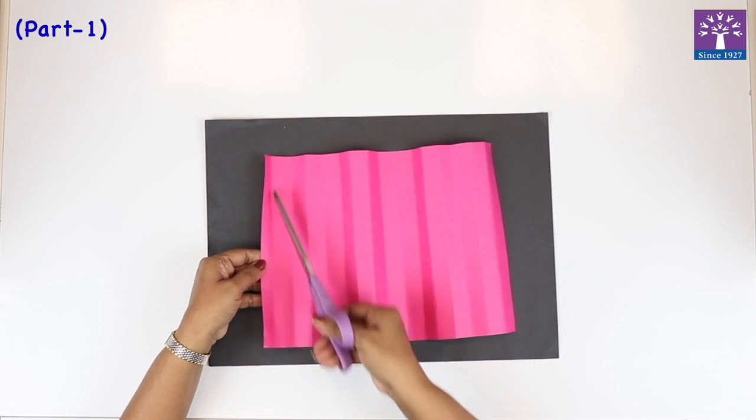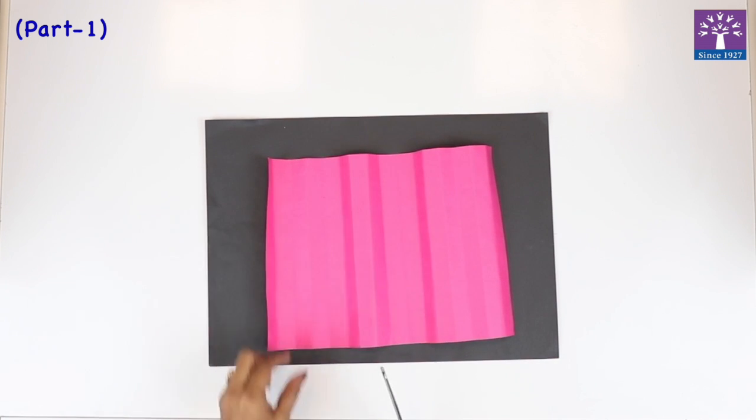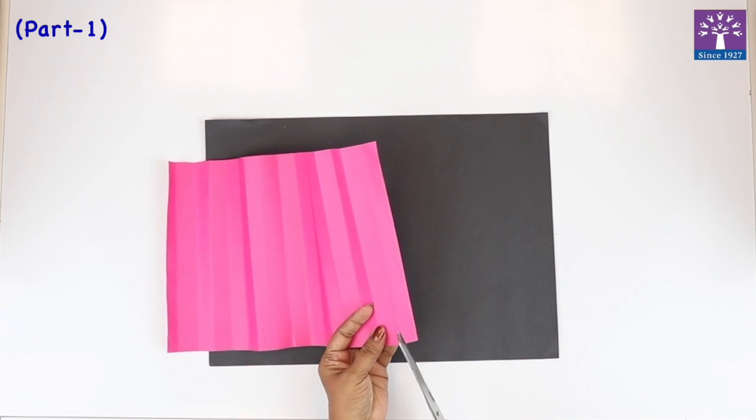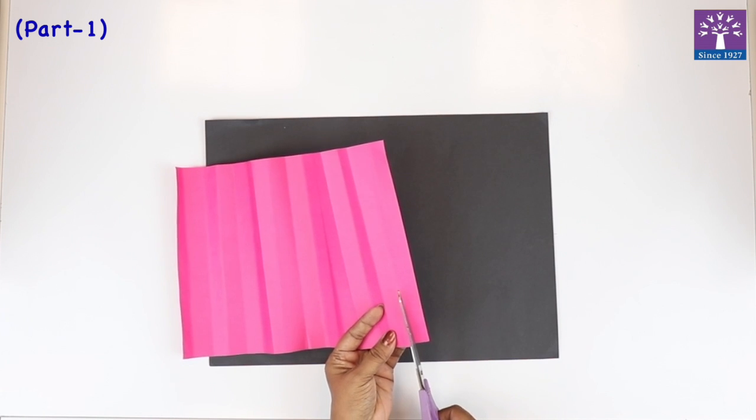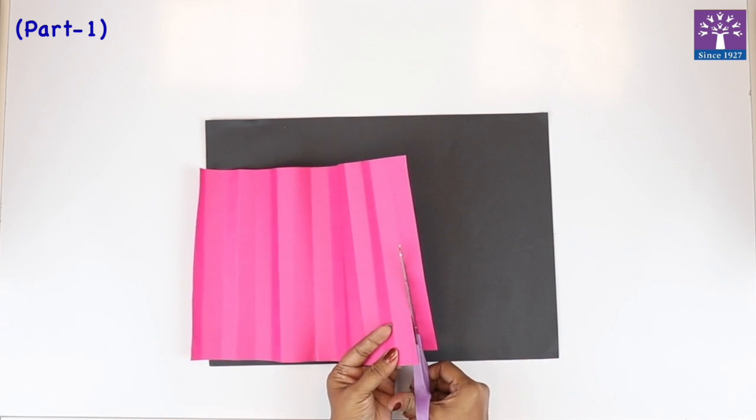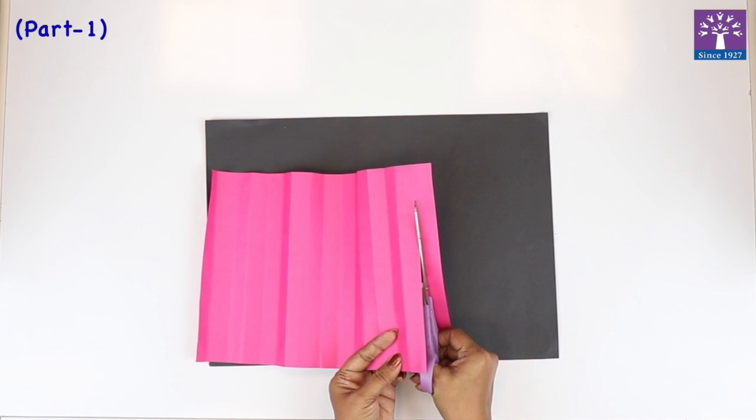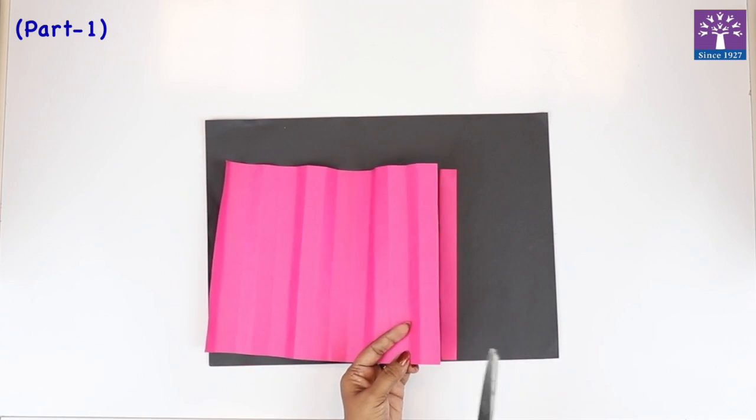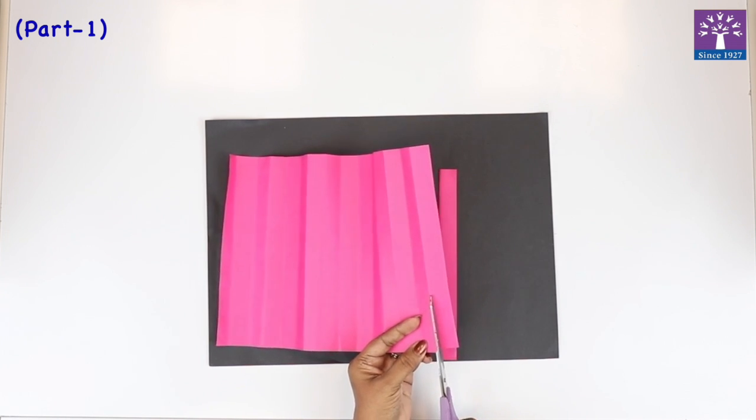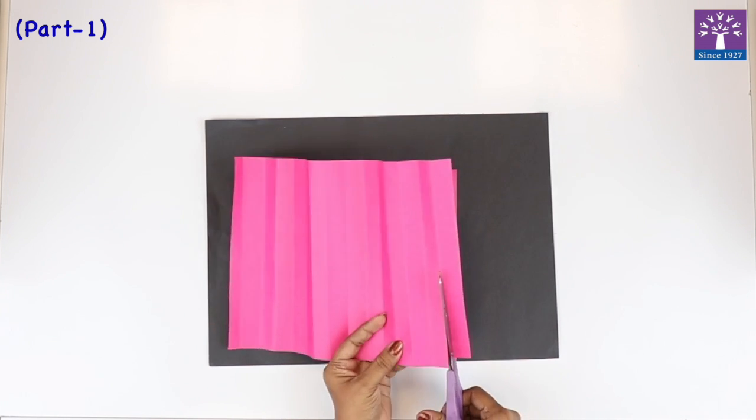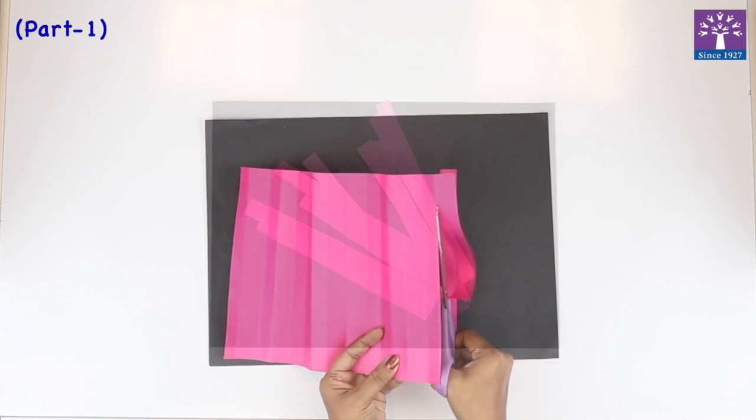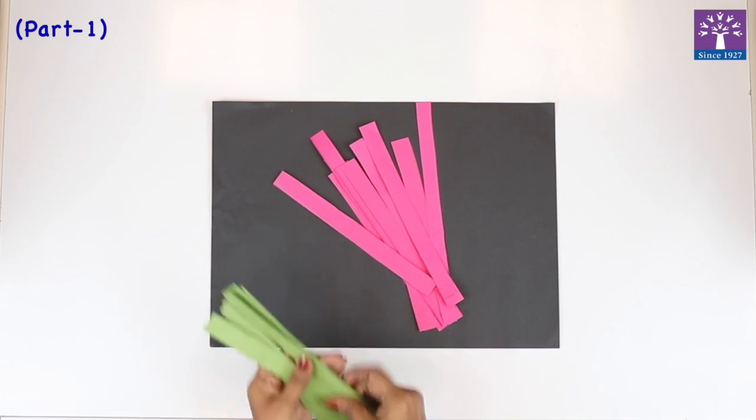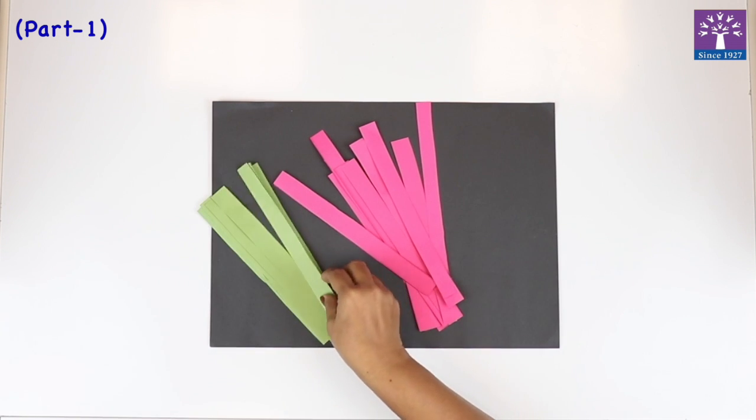What we're going to do now is cut on the crease lines to get equal strips. Let's begin. See, this is the first crease line. This is a simple way to measure your paper. Or else, if you want, you can use a scale, but this is a faster and easier way to divide your paper equally. Our paper strips are ready. I've also cut some green color paper strips.